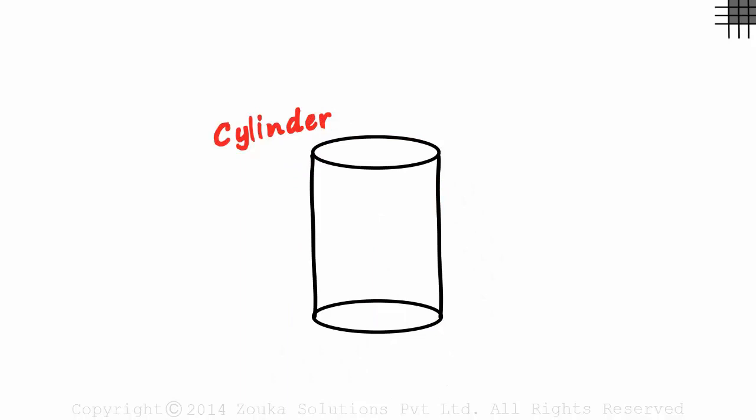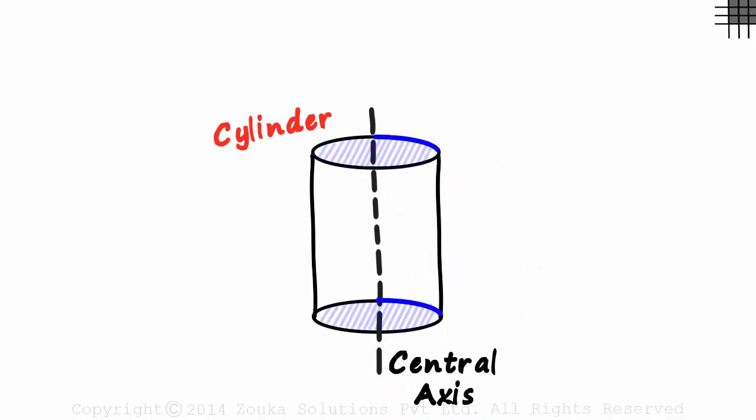Every cylinder has a central axis which passes through the centers of the two circles. The areas of the two circles are equal. That's because the cylinder we consider has a uniform cross section. This tells us that the radii of the two circles will be equal.